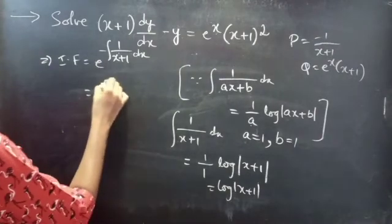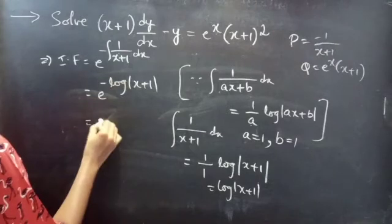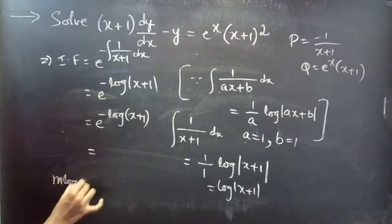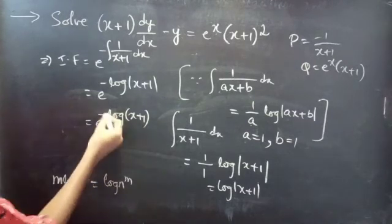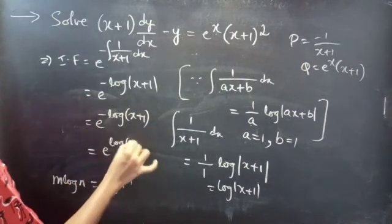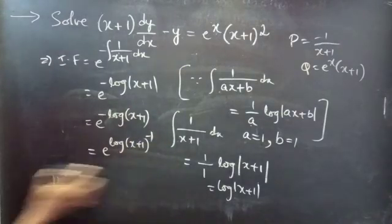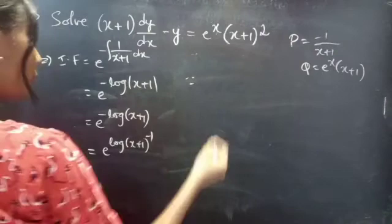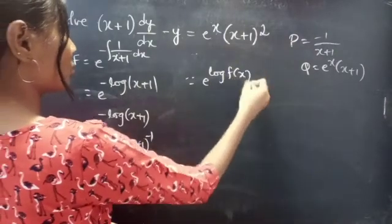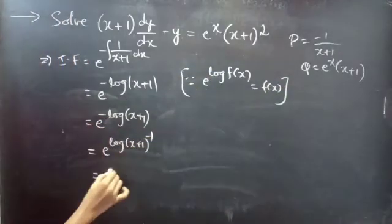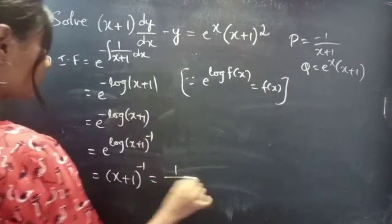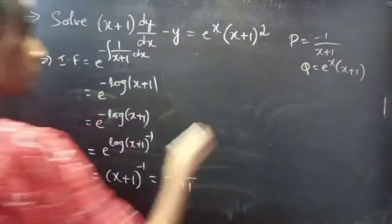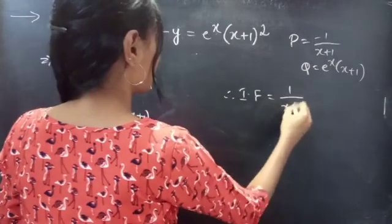We can write e^(−log|x + 1|) as e^(log(x + 1)^(−1)), using the property m·log n = log n^m. Since e^(log f(x)) = f(x), this becomes (x + 1)^(−1) = 1/(x + 1). Therefore, the integrating factor is 1/(x + 1).